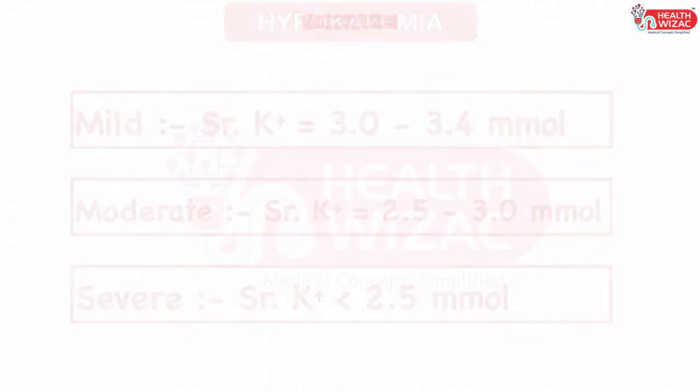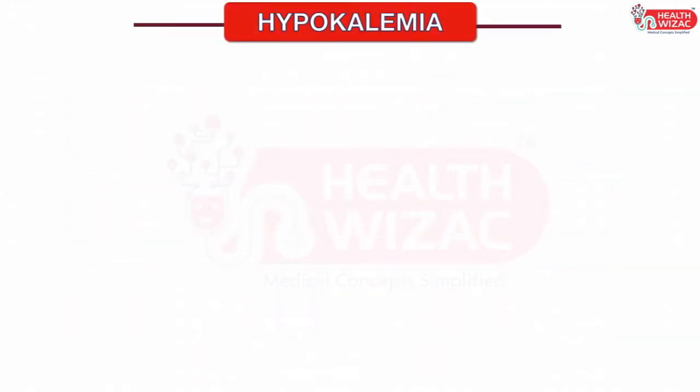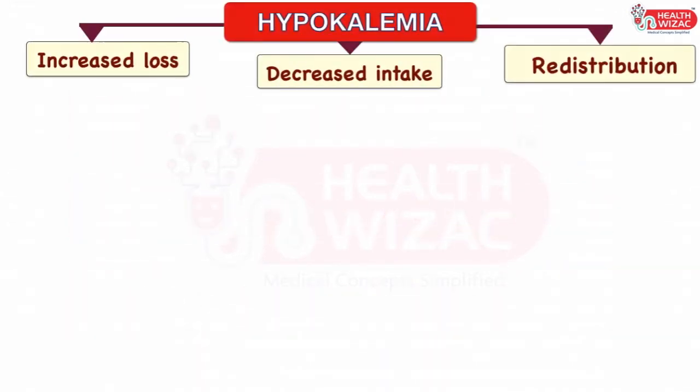Hypokalemia occurs either due to decreased intake of potassium, due to increased loss of potassium from the body, or due to redistribution of potassium between tissue and the extracellular fluid.